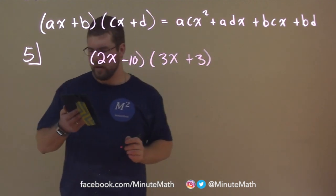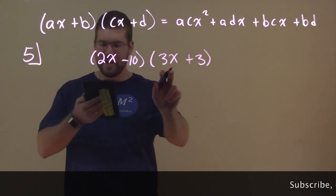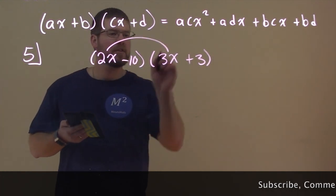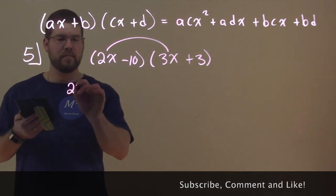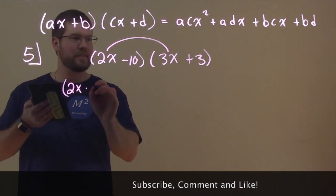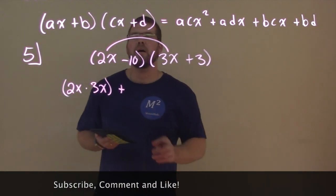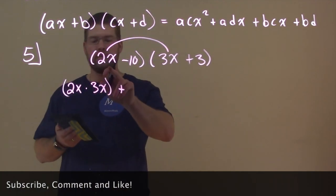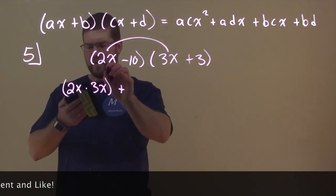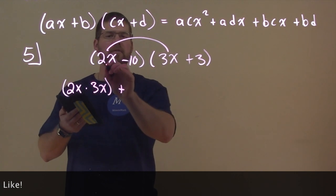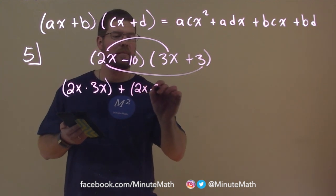We want to multiply our first terms — this is the way I like to do it. The first terms are 2X and 3X, so I make my arch first and write that: 2X times 3X. Then for O in FOIL, which stands for outer, we have 2X times 3.